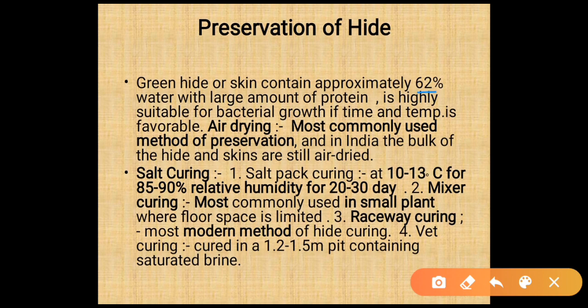Preservation of the hide: green hide contains a large percentage of water and protein, making it highly suitable for bacterial growth. Air drying is the most commonly used method, and in India the bulk of hides and skins are still air dried. Salt pack curing is done at 10 to 13 degrees Celsius at 85 to 90% relative humidity for 20 to 30 days. Mixer curing is used in small plants where floor space is limited. Raceway curing is the most modern method — wet curing in a 1 to 1.5 meter pit containing saturated brine.